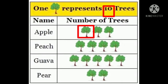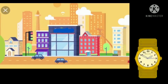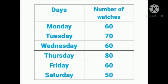A watch company manufactures watches from Monday to Saturday. The table shown on the screen is the data given by the company. Let us make a pictograph to represent the watches manufactured. Step one: draw a table and label it as 'Days' and 'Number of Wrist Watches Manufactured.'